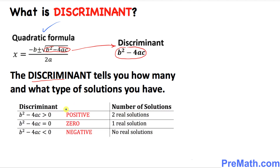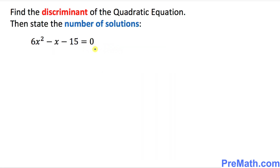The discriminant tells you how many solutions we have and what type of solutions we get. In the next few examples I will explain what it means when the discriminant is positive, when it is zero, and when it is negative. Let's work on this very first example. We are asked to find the discriminant of the quadratic equation and then state the number of solutions.